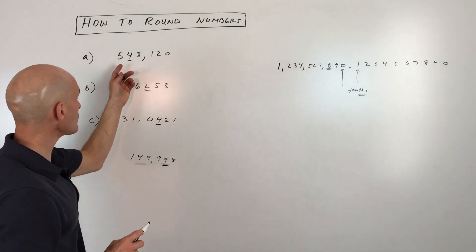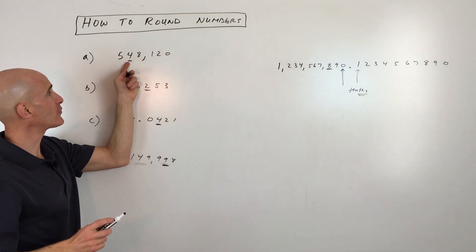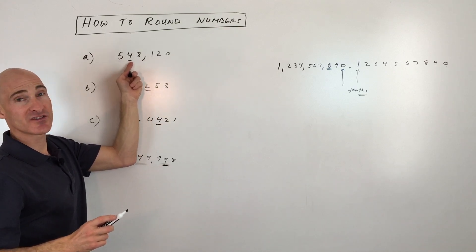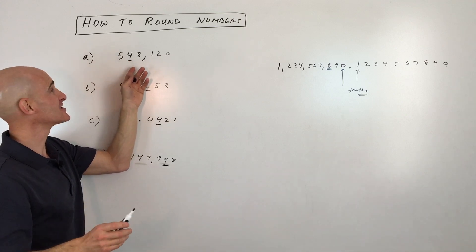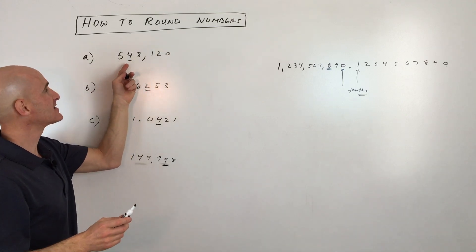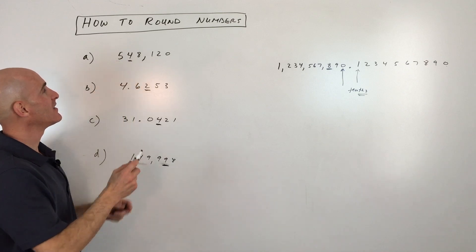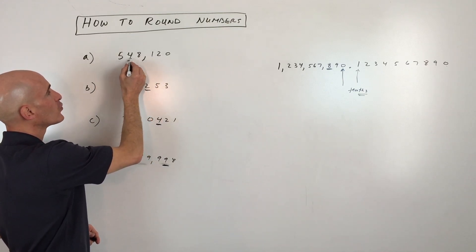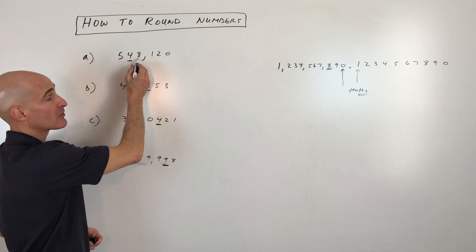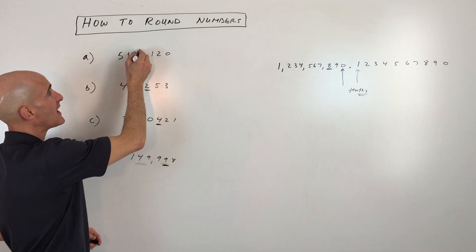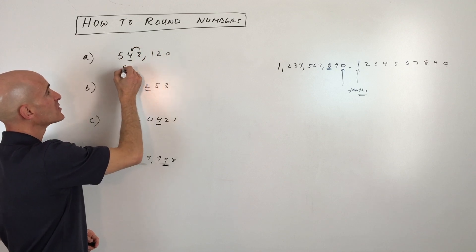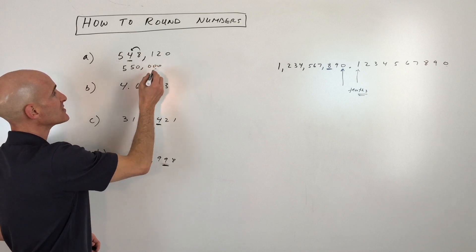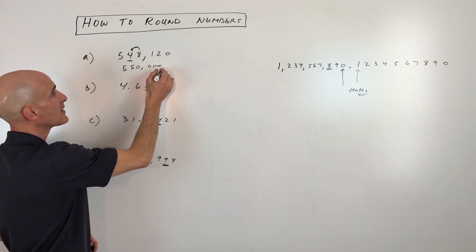For example: 548,120. We want to round to the ten thousands place. We go one place to the right of the ten thousands digit. That digit is an eight — five or more — so we round up. The ten thousands digit goes from four to five, giving us 550,000. We need those trailing zeros because they are placeholders.